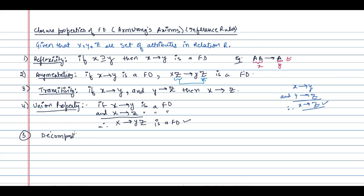The next one is the decomposition property, which is the opposite of the union property. If X determines YZ is already given as a functional dependency, then you can say X determines Y and X determines Z both hold.